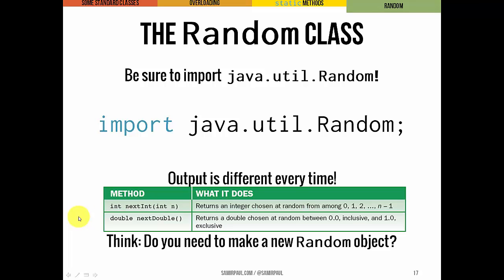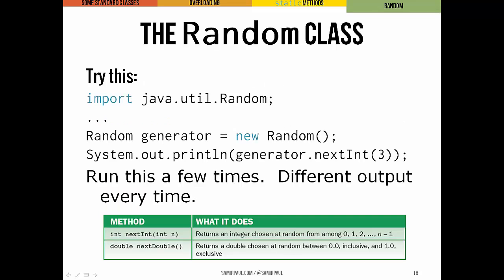So do you think you need to make an actual instance of the Random class, or can you call it in the same way you called the Math methods? And the answer is yes, you do have to make an instance of the Random class, because those methods are not declared as static.